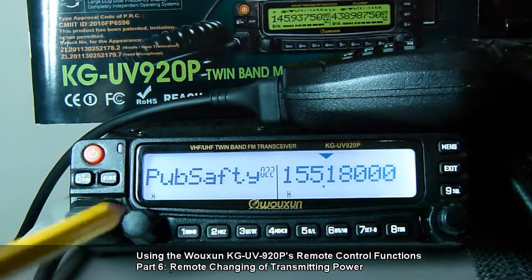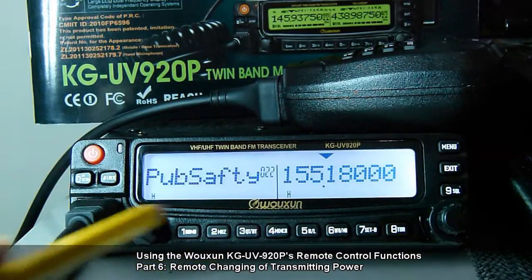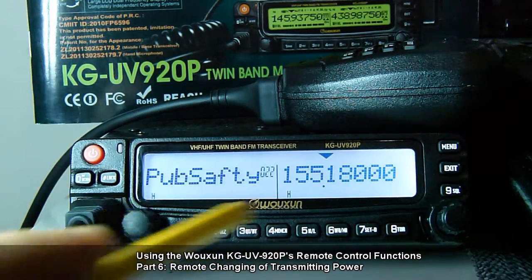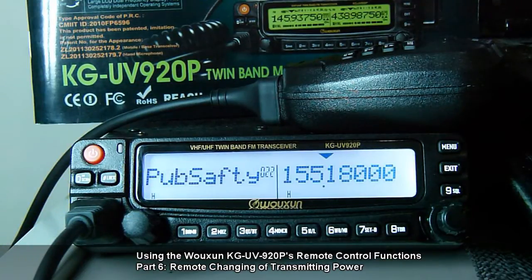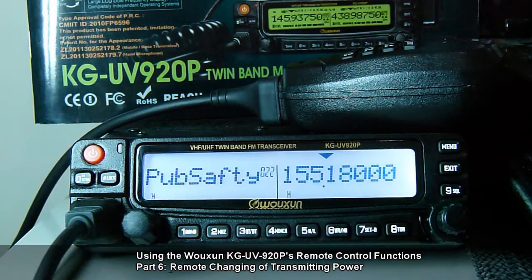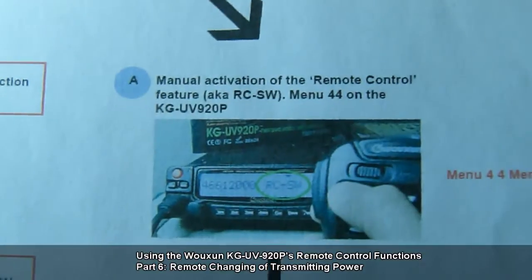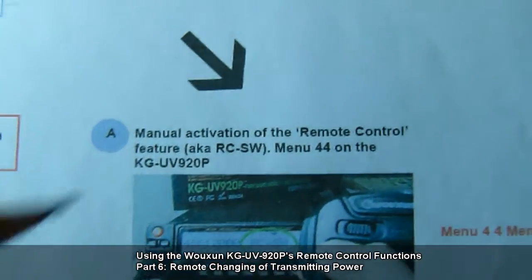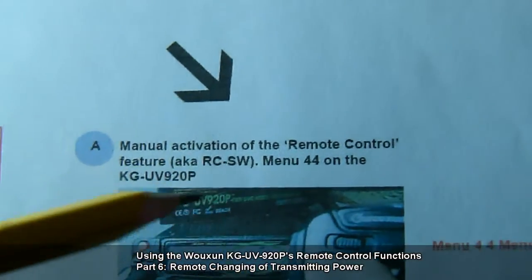Notice that both sides are using high power level. This is the default power level that I have programmed on the radio. When we have this setup, we can proceed to Procedure A, which is about activating the remote control feature of the KG-UV920P — the so-called RC-SW feature.